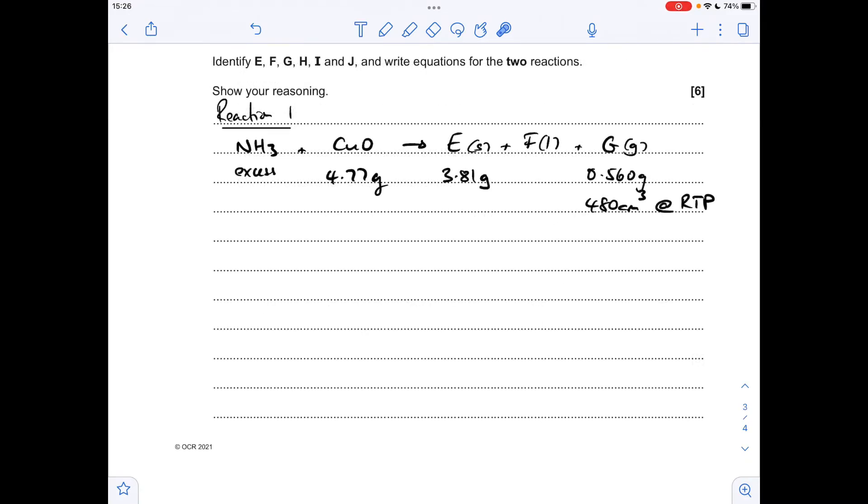Moving on to part C, which I've got to say is quite a tricky question. Lots of information to process. First thing I'm going to do is look at reaction 1. I'm going to work out the moles of copper oxide because we know the formula and mass, and work out the moles of gas from the volume at RTP, then I can work out the MR because I've got the mass as well.